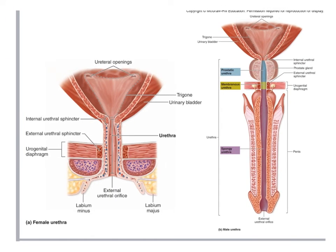Here's the difference in the urethra between men and women. In women, it is only a conduit for urine and it is much shorter, which has the advantage of eliminating urine quicker. The disadvantage is that its placement along the perineum brings a higher incidence of urinary tract infections. In men, it is much longer and is also a conduit for both urine and semen.